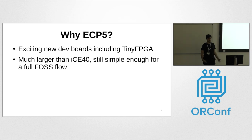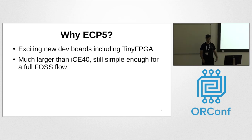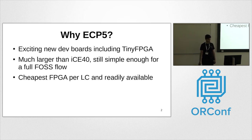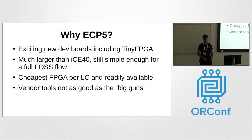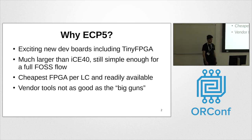It's nonetheless still relatively simple, so it's not too much work to build up a FOSS flow — definitely easier than the 7-series parts. It's also, as far as I know, the cheapest FPGA per logic cell, certainly in single quantities, and it's very readily available. And unlike Vivado, Diamond is not a very good tool at all, so there's quite an incentive to build a really nice open source flow.